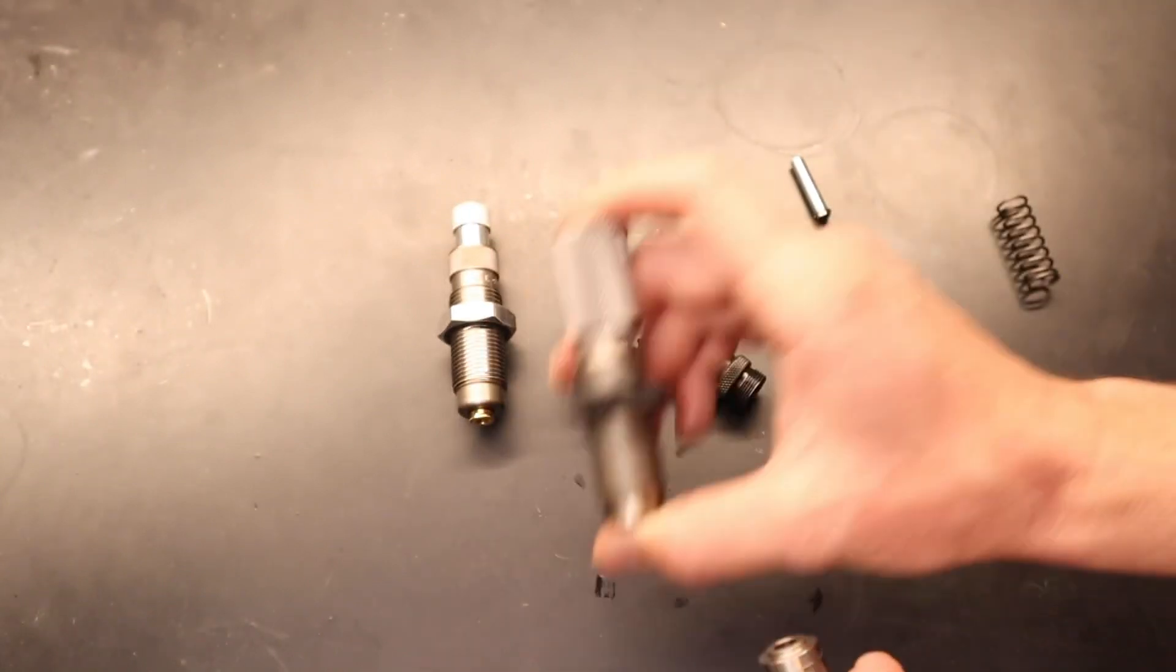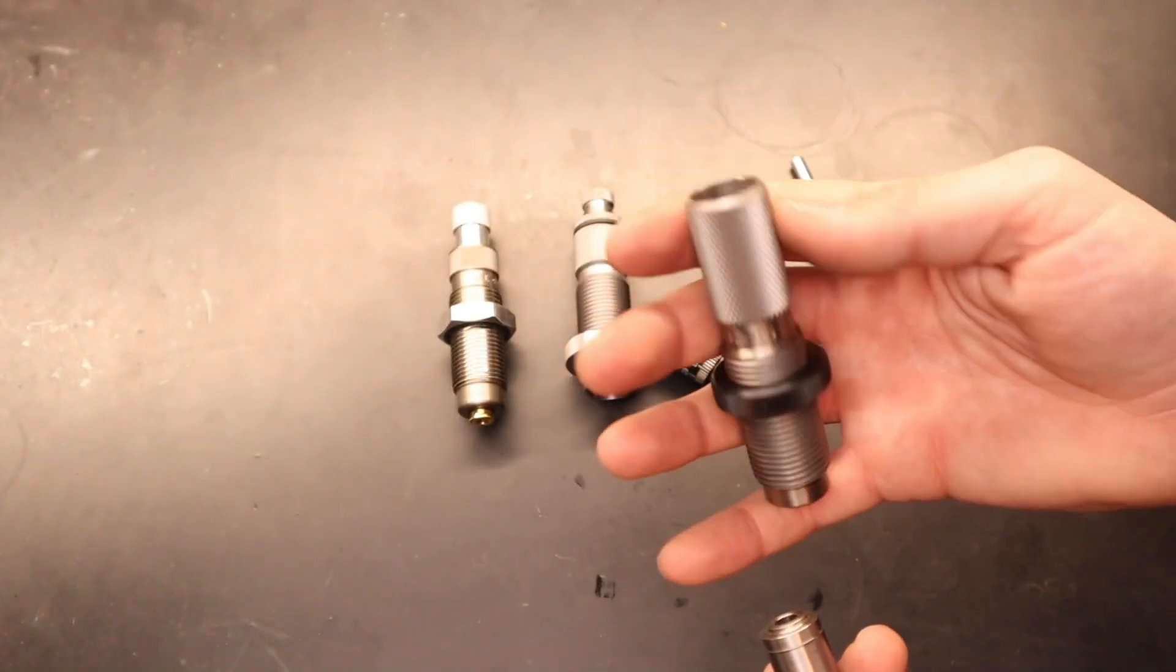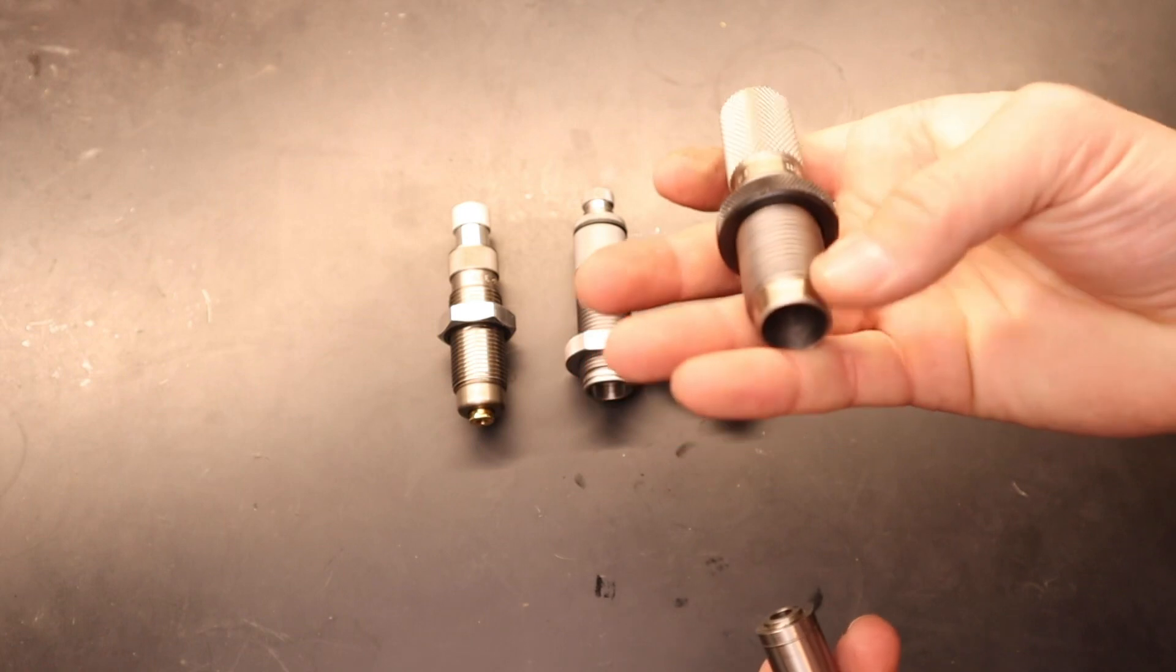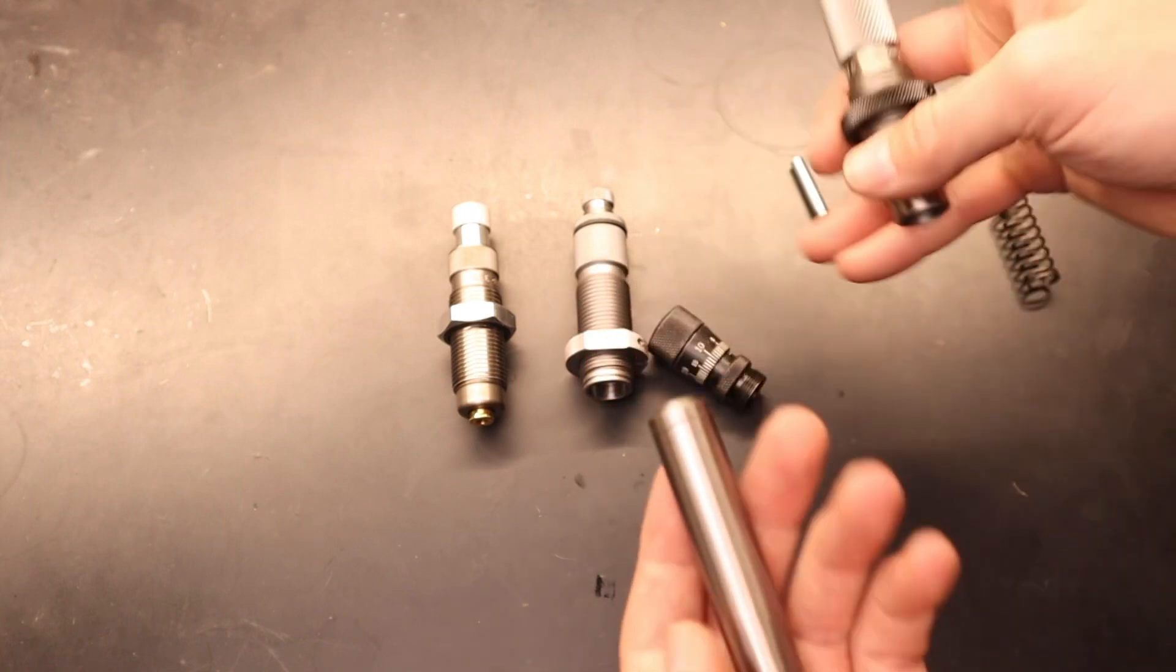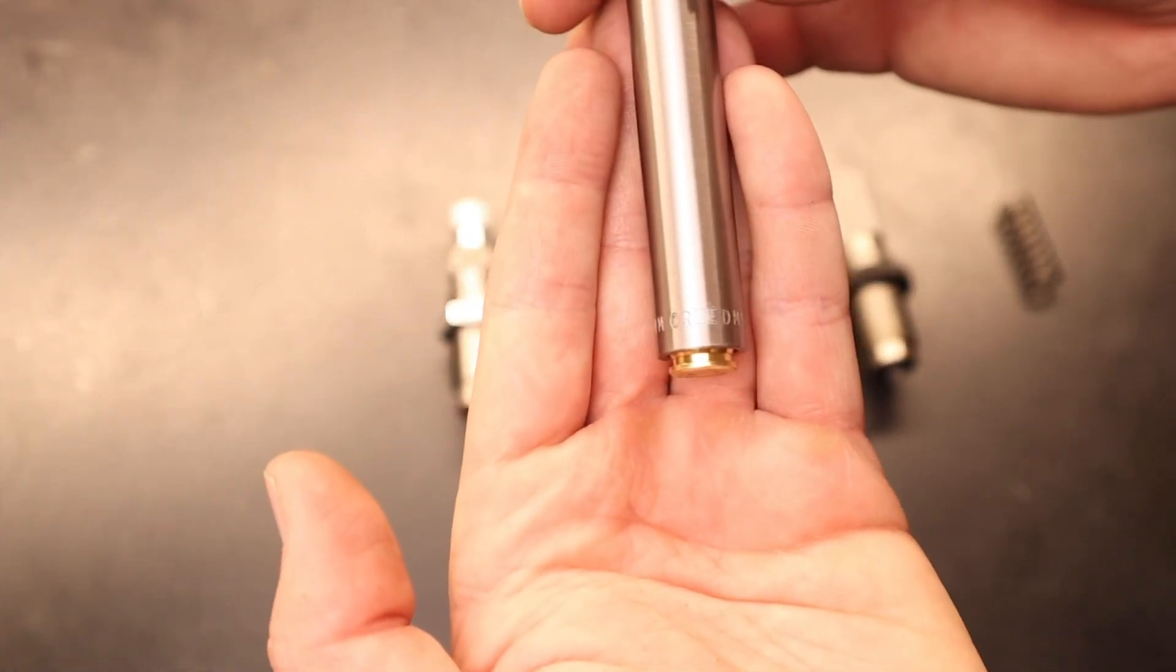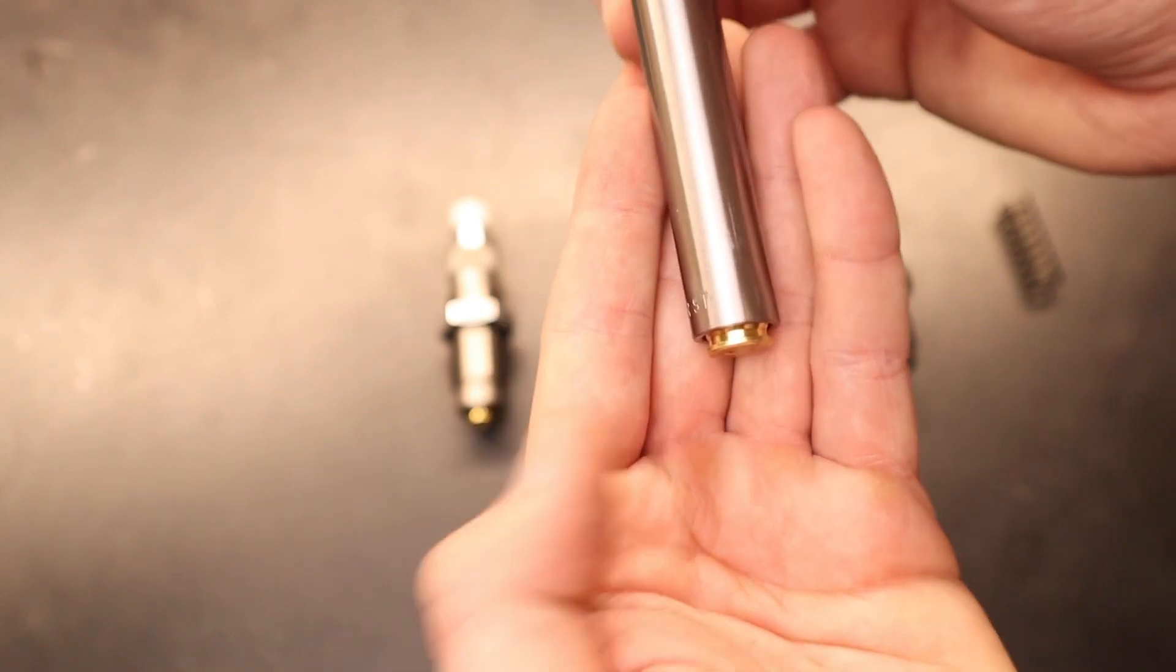Now, this is actually just a universal body for their seating dies. It's threaded up top, and then it allows the internal collar to move in and out. The die is actually marked on this collar. So this one says 6mm Creedmoor.